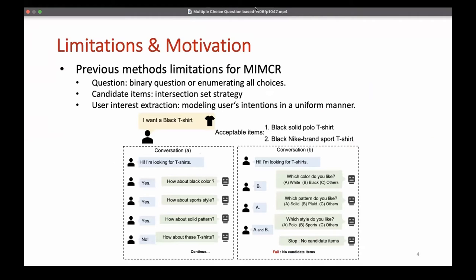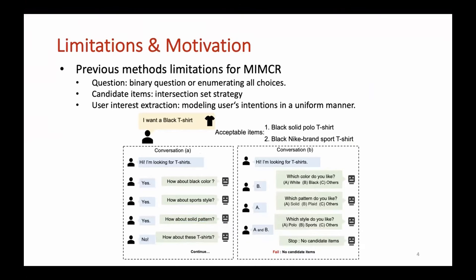Existing works may encounter three significant limitations under our proposed MIMCR scenario. First, as shown in conversation A, current CRS frameworks often employ binary questions, which is concise but unable to elicit user interests effectively. On the other hand, enumerating all choices is not practical since there may be too many attribute instances to be shown and answered by the user.